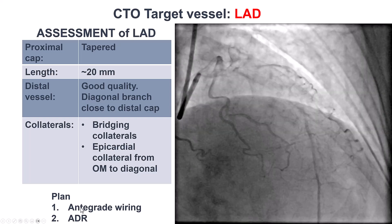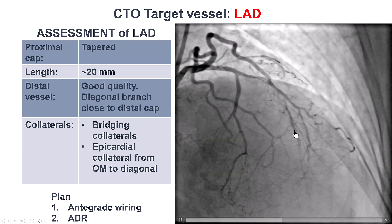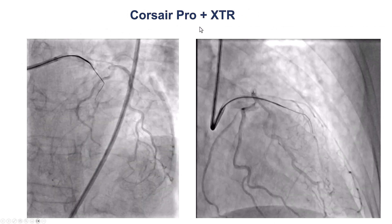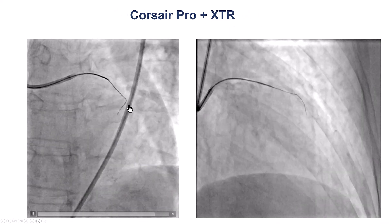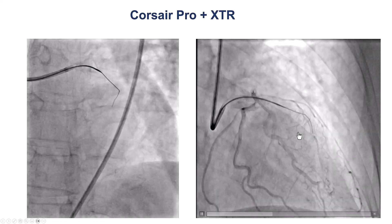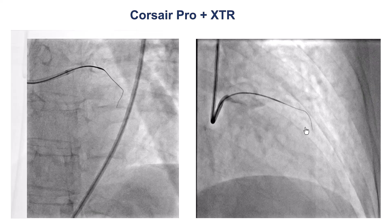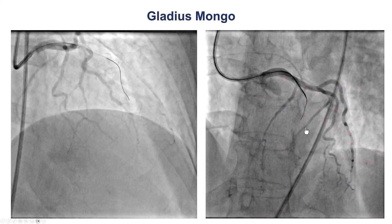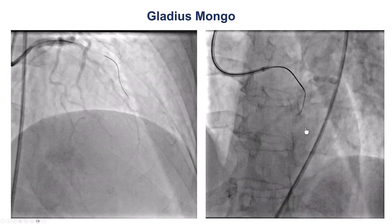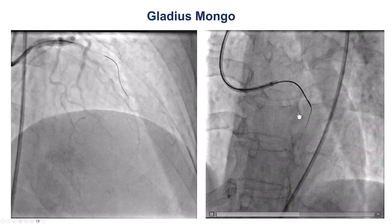We did not think that the epicardial collaterals were interventional. Therefore, we decided to first try antegrade wiring, and if that didn't work, use antegrade dissection and re-entry. We used a Corsair Pro with a Fielder XTR — a soft wire — to avoid causing any perforation. The wire was seen in the extra-plaque space, dancing in sync with the middle LAD. We then used a Gladius Mongo wire, and once again we were extra-plaque, moving in sync with the middle LAD.